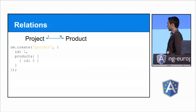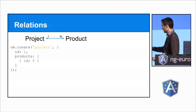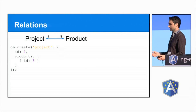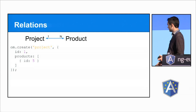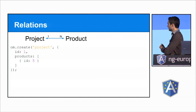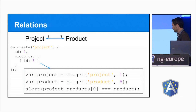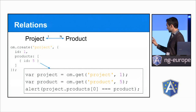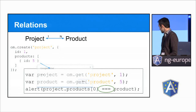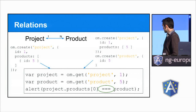So this is kind of how it works. For example, you got a project from your API and you want to store it in your RRM. The OM is an instance of the RRM. You say it's a project and the ID is 1 and there's a couple of products in it — in this case only one. The ID of the product is 5, there could be more properties on it. This is assuming that you have set up the RRM correctly, of course. Then this code becomes possible. You can get the project out of the RRM by the ID and then get the product by the ID, and then you can assert that the first product on the project is in fact the exact same instance. So this line of code alerts true.